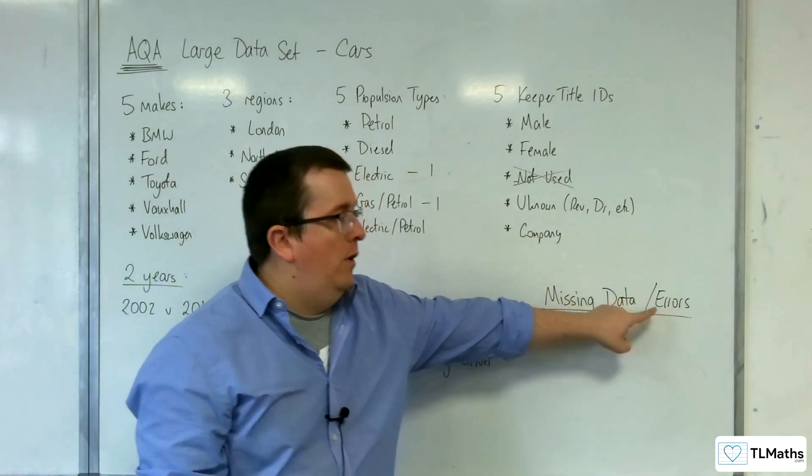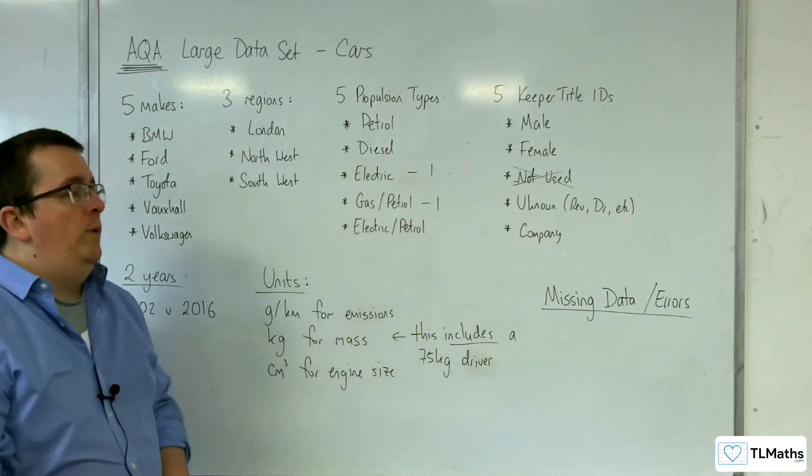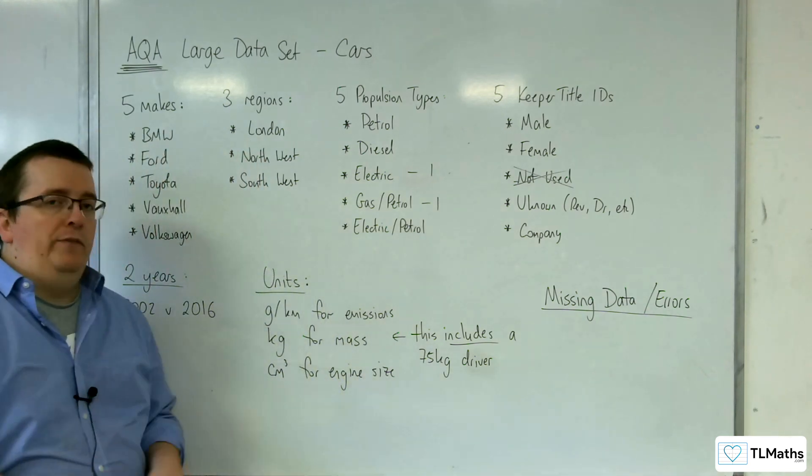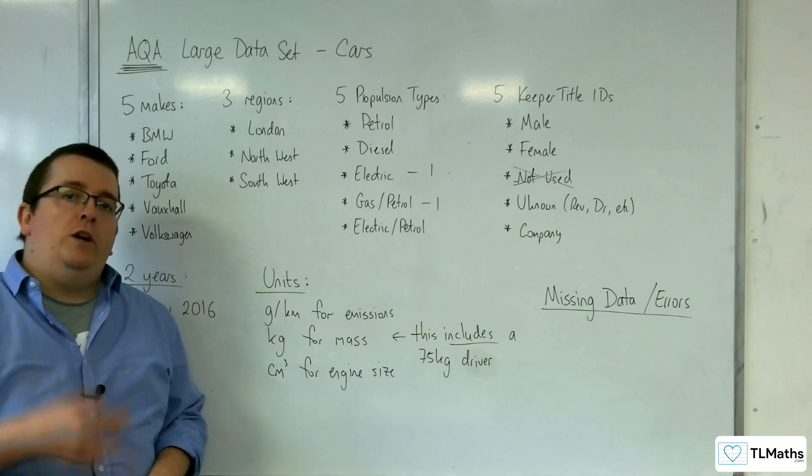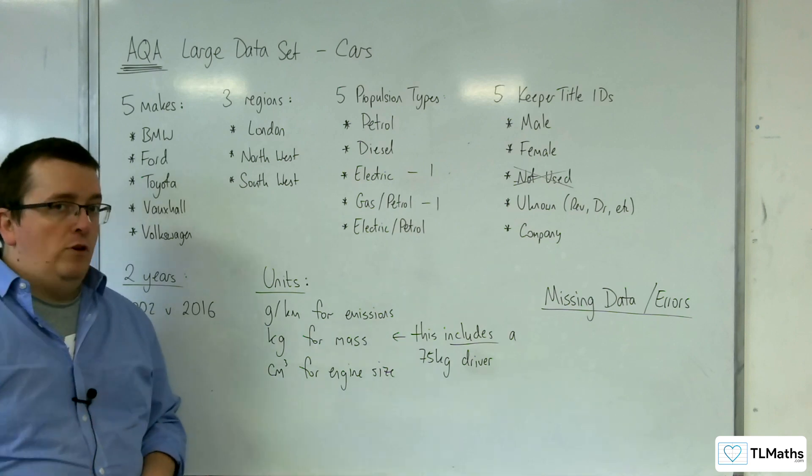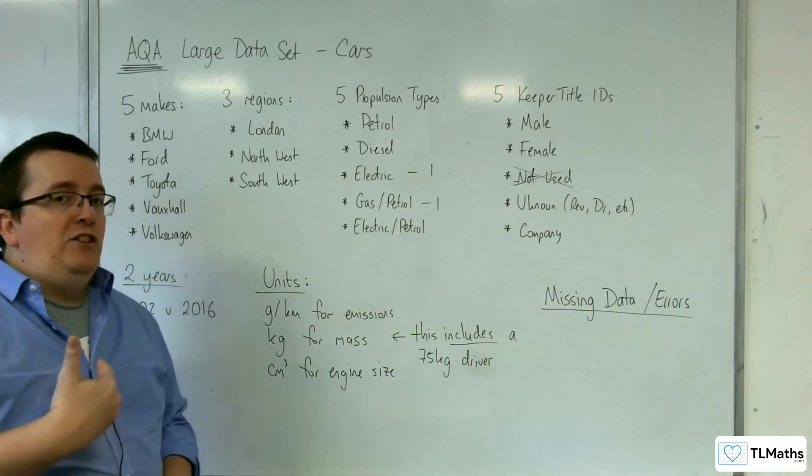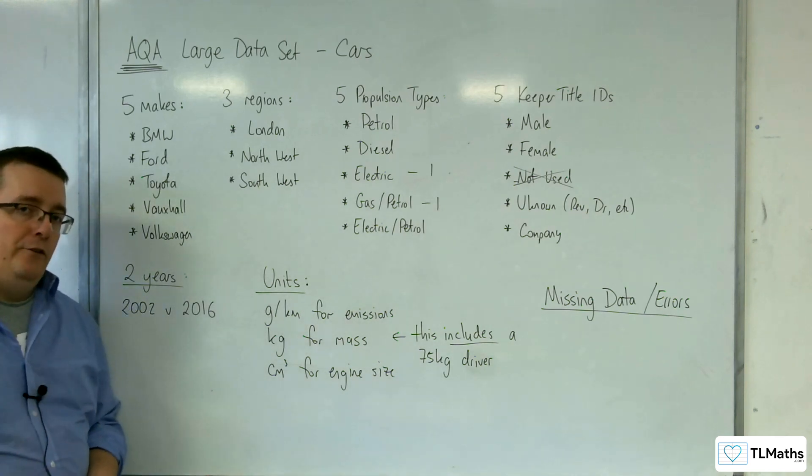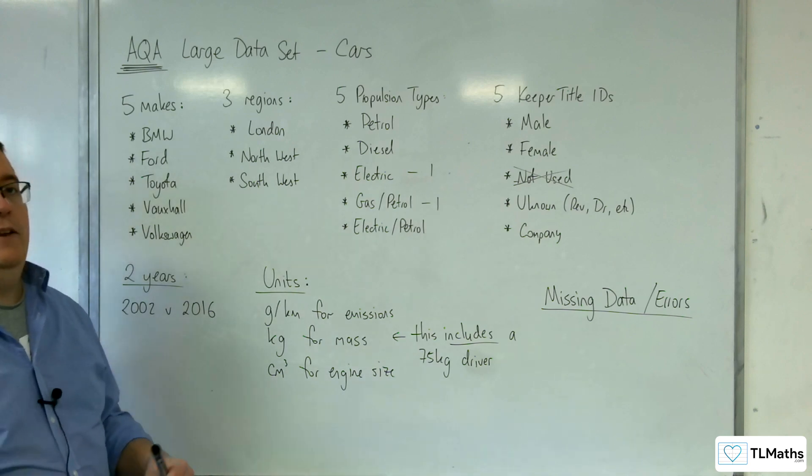As well, you should be on the lookout for errors. So there are situations within the data set where the mass of a vehicle has been given as zero kilos, which is obviously an error. That can't be correct. So you need to be aware that that data needs to be cleaned first before you would be able to look at, say, the mean or standard deviation of the whole population.